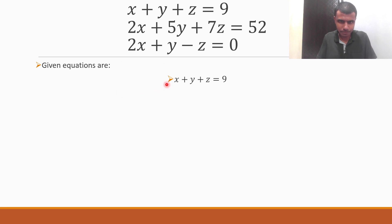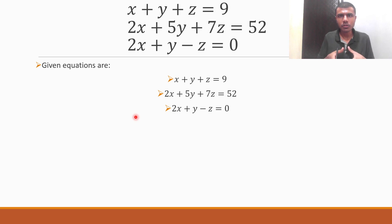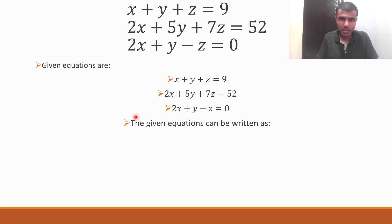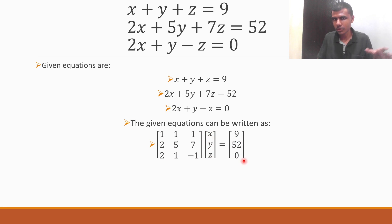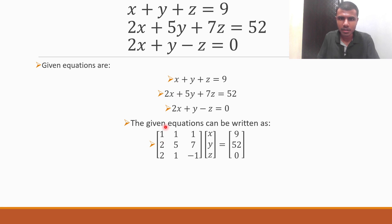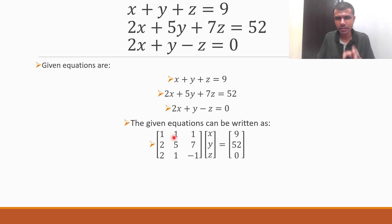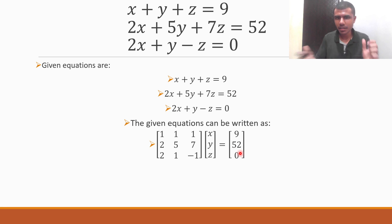The given system of equations — I just wrote the question again, the equations given in the question. Now what I'm going to do is write it in matrix form. The given equations can be written as a square matrix into a column matrix equal to another column matrix. It's a 3×3 square matrix times a 3×1 matrix equal to a 3×1 matrix. The coefficients of x, y, z in the first equation are 1, 1, 1 and RHS is 9. Likewise 2, 5, 7 and 52. Likewise 2, 1, −1 and 0. So this is what I'm given.